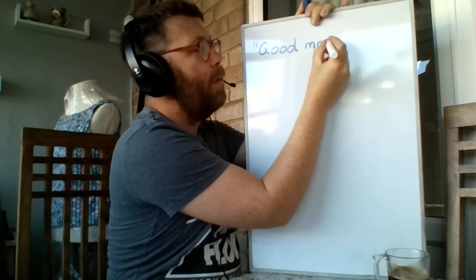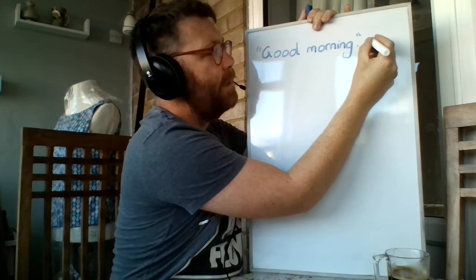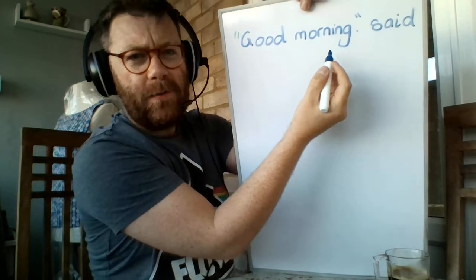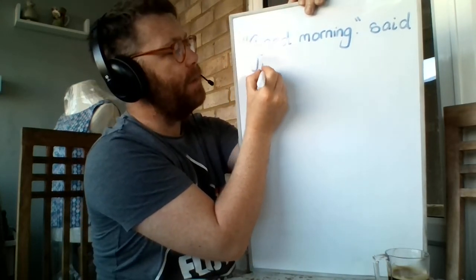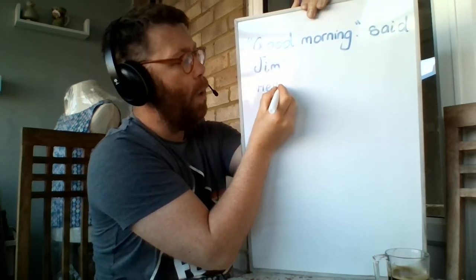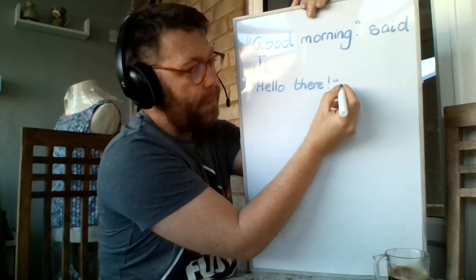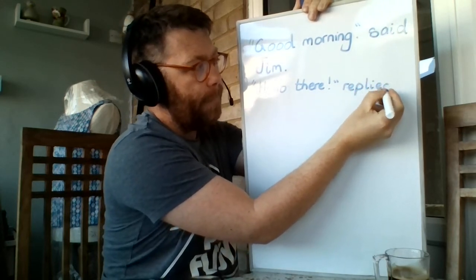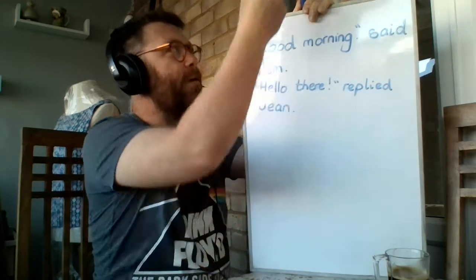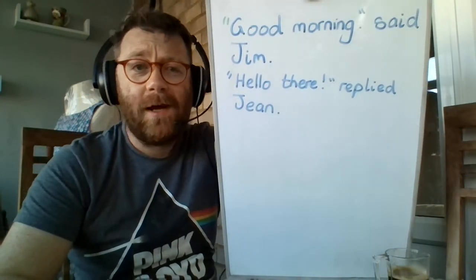"Good morning," — in inverted commas — said Jim. Remember, I'm not putting a capital there because it's still carrying on the normal sentence: "Good morning, said Jim." And remember, when someone new speaks you start a new line. "Hello there!" — exclamation — replied Gene. Jim and Gene, our favourite comedy duo. So there's our sentences: "Good morning, said Jim. Hello there, replied Gene."